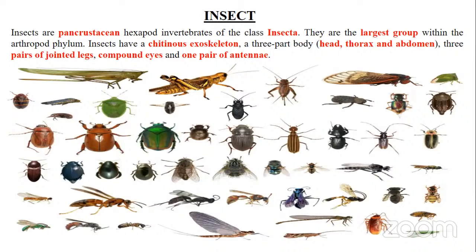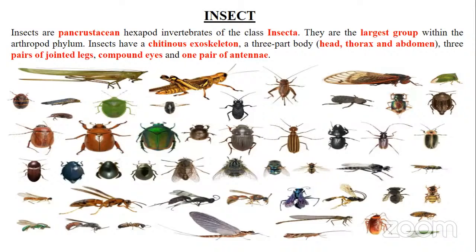Most insects are covered with a chitin-made exoskeleton. The insect body is classified into three different parts: head, thorax, and abdomen. Insects also have three pairs of jointed legs, compound eyes, and a pair of antennae. Antennae are very useful for sensing the environment.